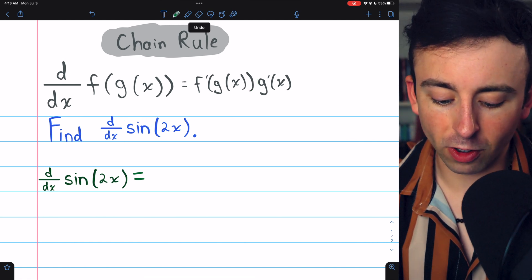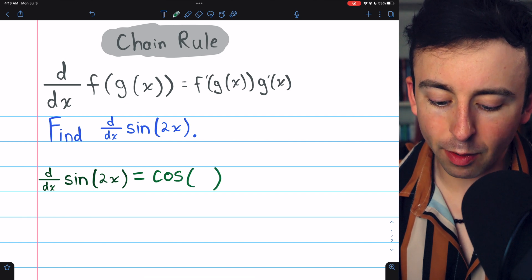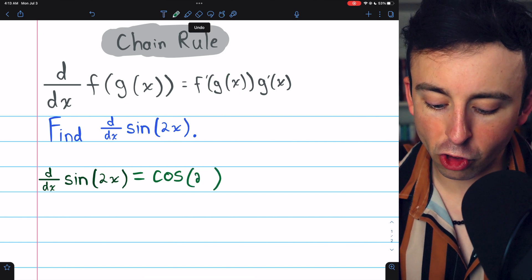In this case, the outside function is sine, and its derivative is cosine. The inside function, 2x, we need to leave unchanged.